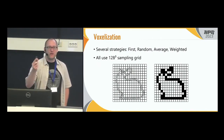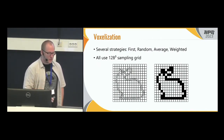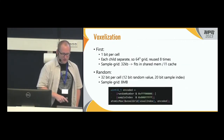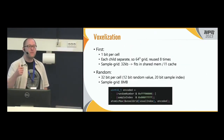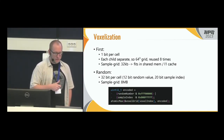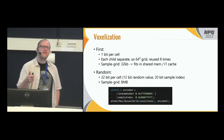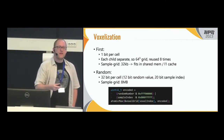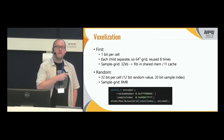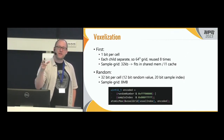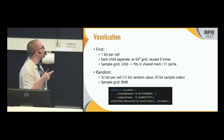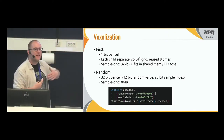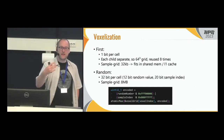The first-come strategy is biased towards earlier points in the data set. A little better is a random strategy where you pick one random point in the voxel. Better still are average and weighted sampling strategies. For the first-come strategy, we only need one bit per cell in the sampling grid to indicate if the voxel is occupied, making the sampling grid about 32 kilobytes — fitting in shared memory, which is one reason this is fast. For random sampling, we use an integer with a random number component and an index component, then do an atomic max so samples with the largest random numbers are accepted.